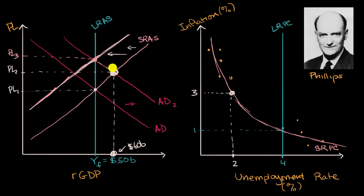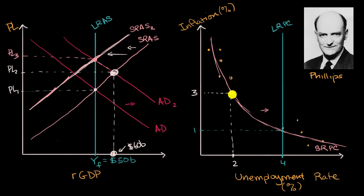Many economists argue that when the short-run aggregate supply shifts — this would be short-run aggregate supply 2 — it is also associated with a shift in the short-run Phillips curve. Because of price increases and workers renegotiating salaries upward, and since labor is the biggest factor in price levels, inflation expectations increase. At any given inflation rate, unemployment starts higher. So the short-run Phillips curve shifts to the right, and we end up in a situation where inflation is still at 3% but unemployment is back at the long-run natural rate.